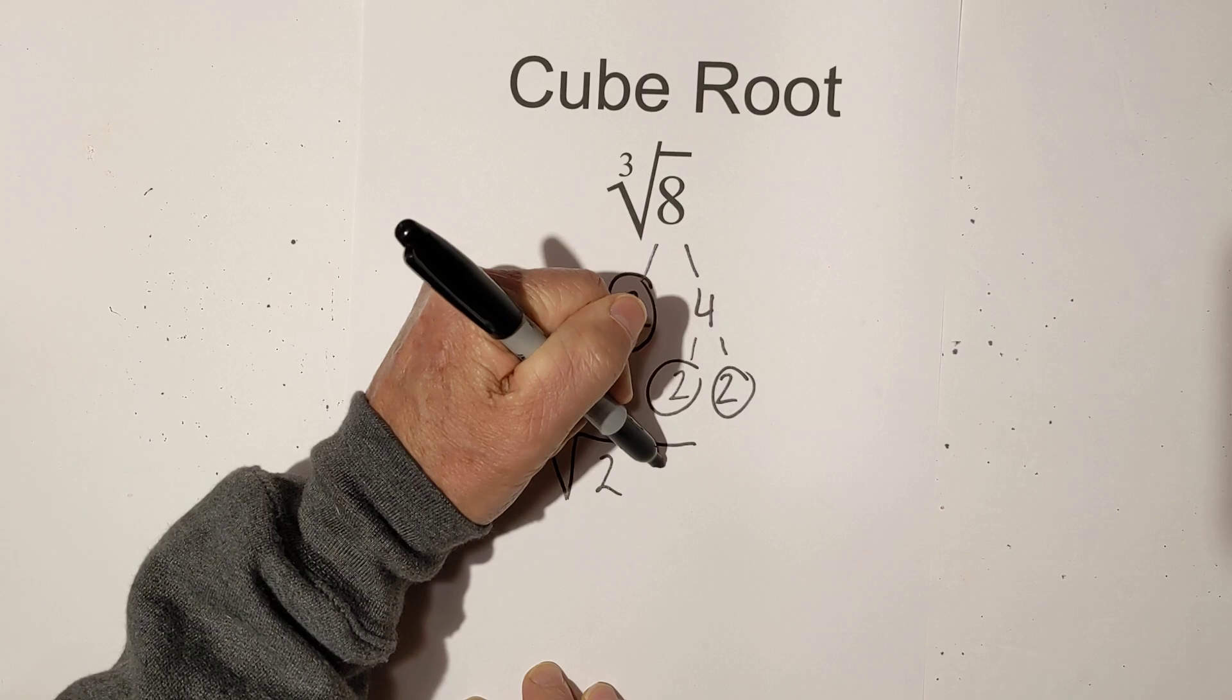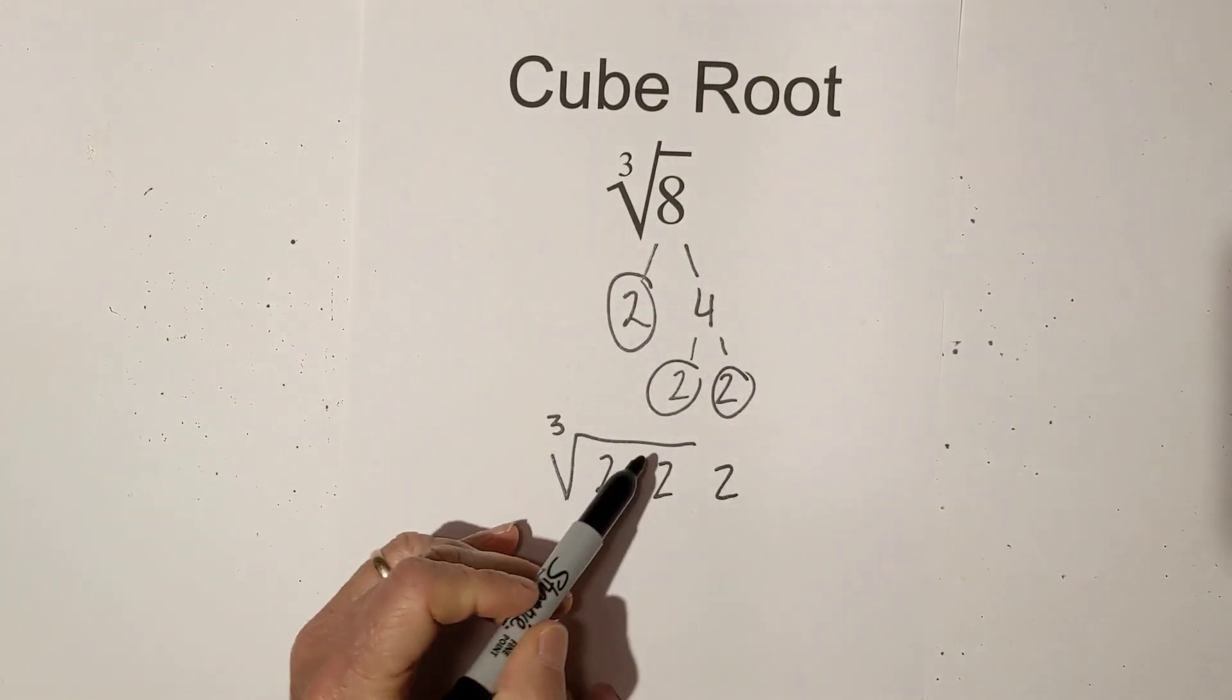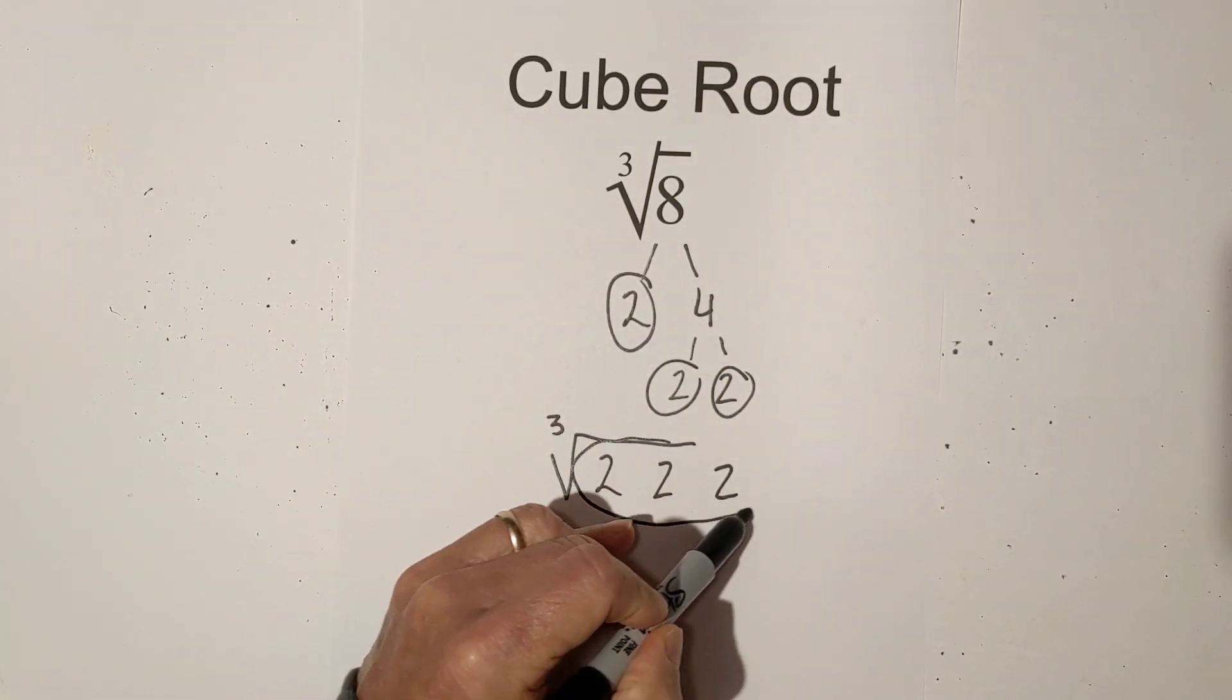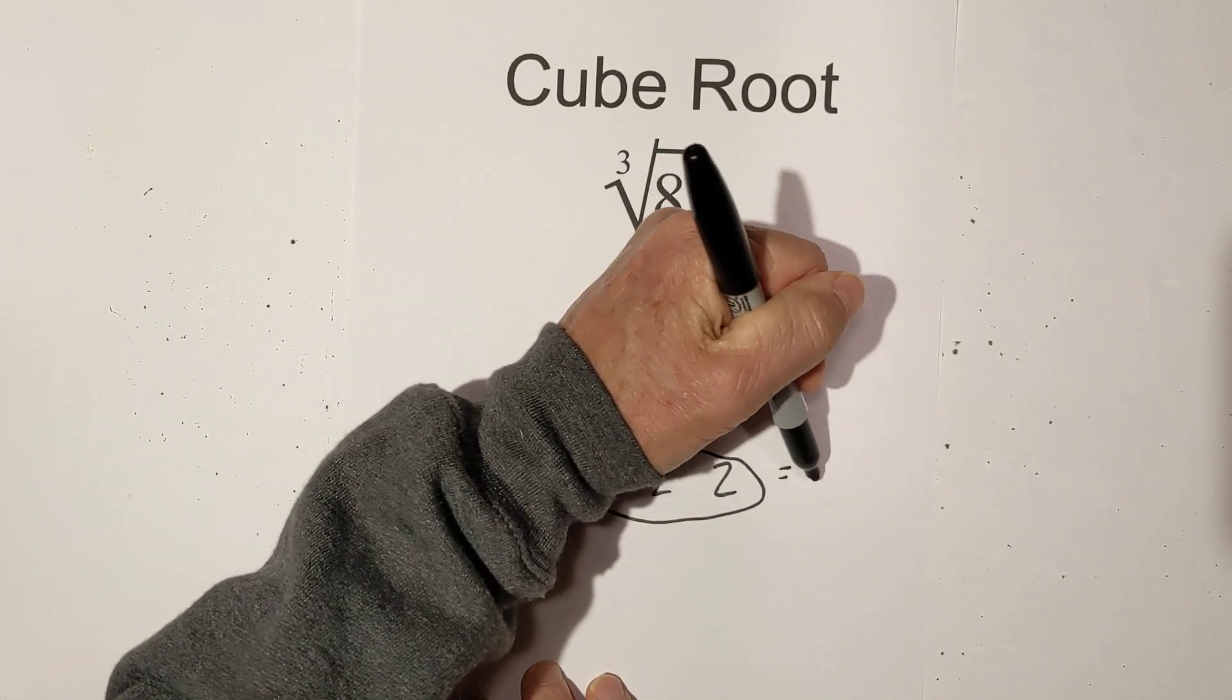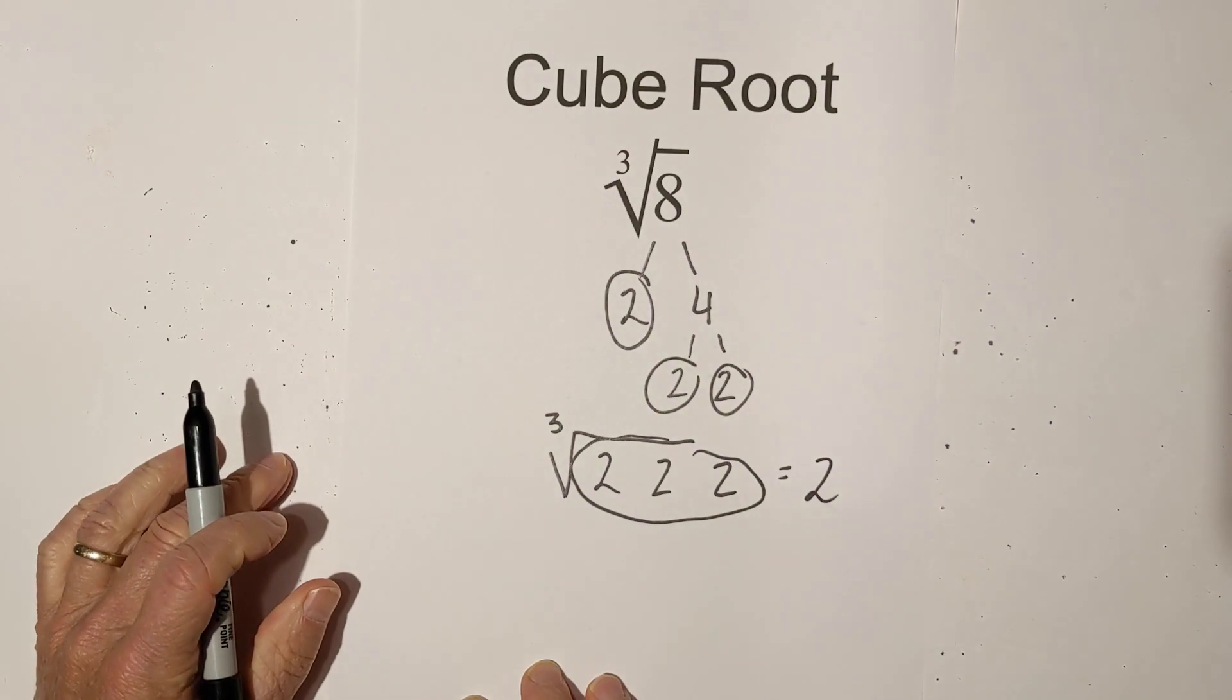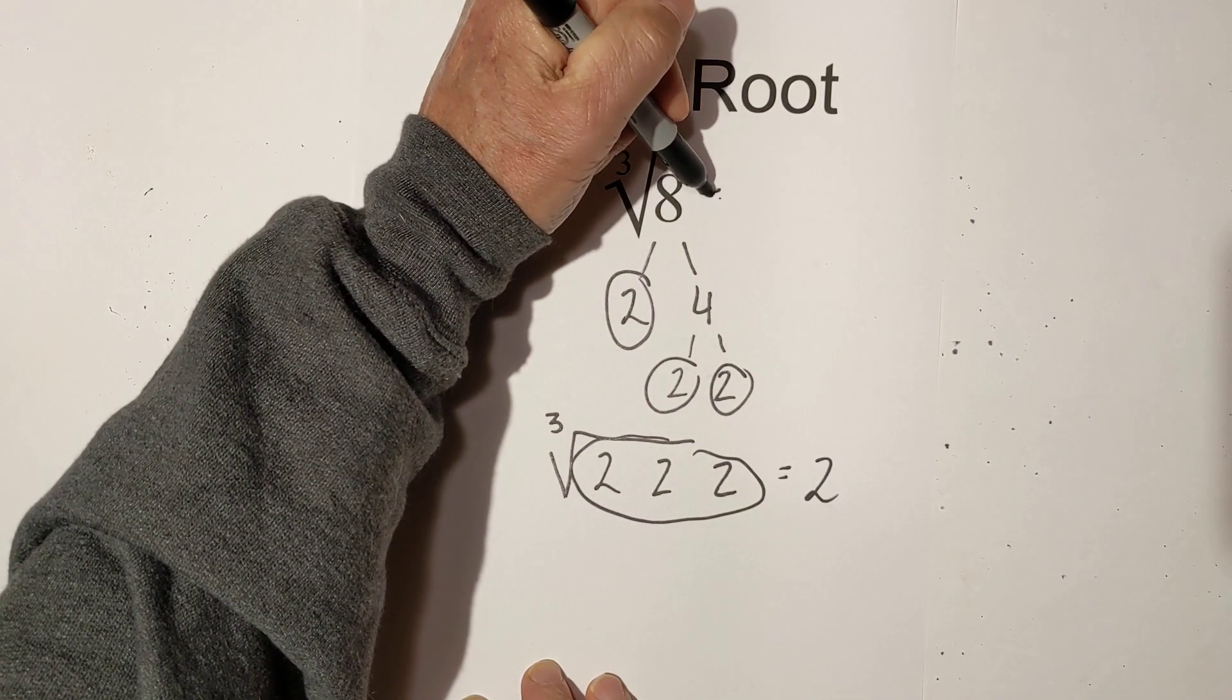We have 2, 2, and 2. And then what you can do, groups of 3 you can pull out from under the cube root sign but you only pull out one number, so the cube root of 8 is 2.